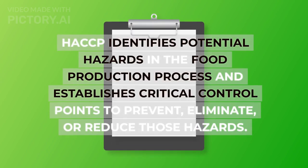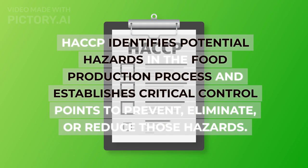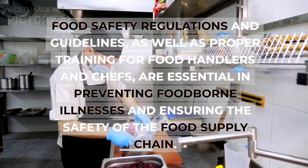To manage and mitigate these food hazards, food establishments including restaurants and food manufacturers follow food safety protocols, including the Hazard Analysis and Critical Control Points system. HACCP identifies potential hazards in the food production process and establishes critical control points to prevent, eliminate, or reduce those hazards. Food safety regulations and guidelines, as well as proper training for food handlers and chefs, are essential in preventing foodborne illnesses and ensuring the safety of the food supply chain.